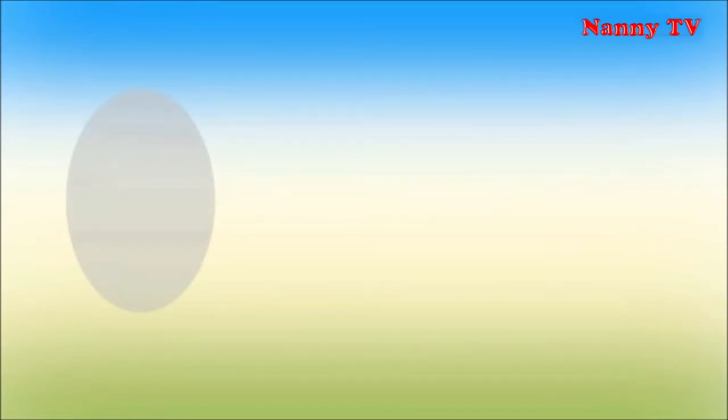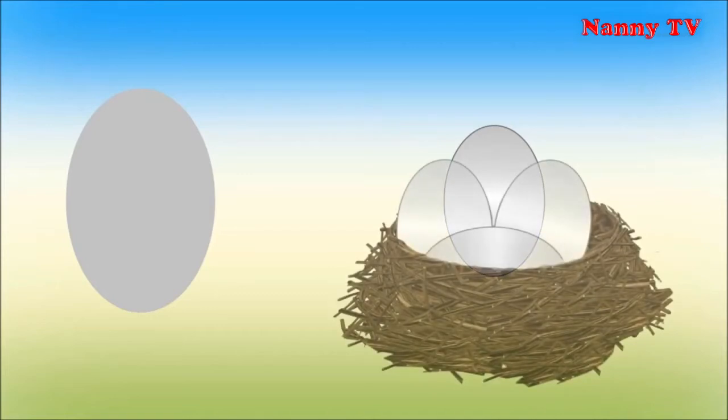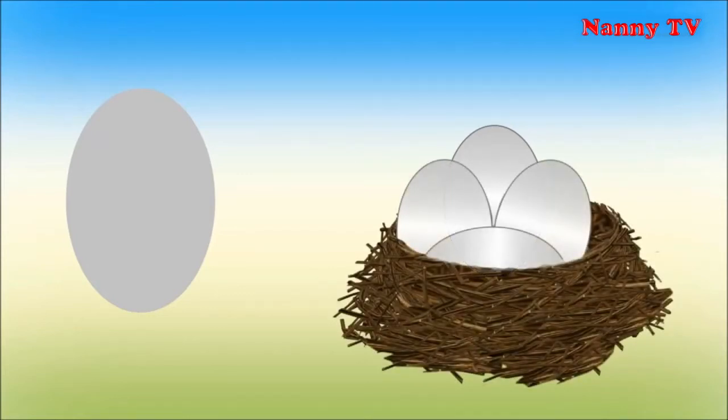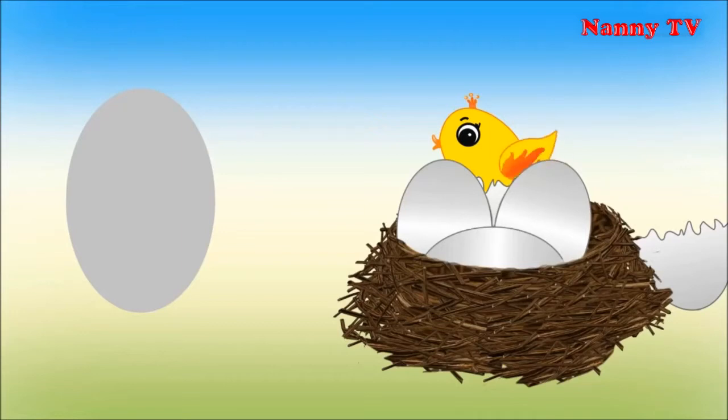Look! There is an oval. It is a gray oval. An oval looks like an egg. Who is there? There is a chicken in the egg, a little fluffy chicken.